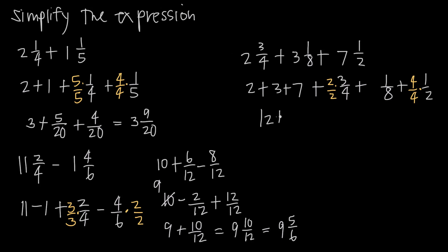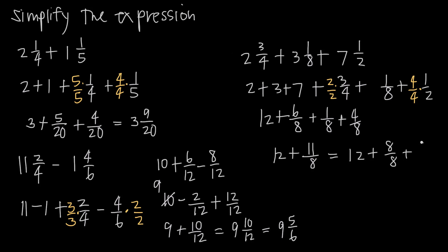2 plus 3 is 5, and 5 plus 7 is 12. For the fractions: 2 times 3 gives 6/8, plus 1/8, plus 4/8. Adding the numerators: 6 plus 1 is 7, and 7 plus 4 is 11, giving me 12 plus 11/8. Since 11/8 is an improper fraction, I split it as 8/8 plus 3/8. The 8/8 reduces to 1, so I get 12 plus 1 plus 3/8, which equals 13 and 3/8 — my final answer in mixed number form.